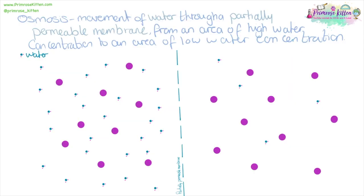Osmosis is specifically the movement of water through a partially permeable membrane from an area of high water concentration to an area of low water concentration. You'll notice it's a partially permeable membrane — the pores in it aren't large enough for the solute to move through, so the water is going to be the one that moves through. This sort of thing can happen in root hair cells where we're looking at the uptake of water.